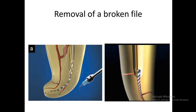There are different ultrasonic tips depending on the size of the canal. We can change the tip size according to the canal size. Another tip is used to remove and loosen the fragment — the broken instrument — until the fragment becomes very loose and can be pulled out of the canal.